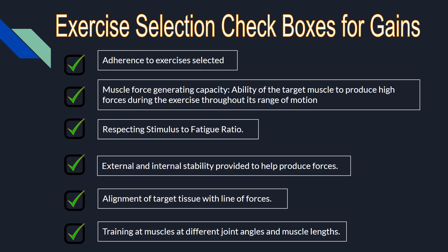Second is muscle force generating capacity — the ability of the target muscles to produce high forces during exercise throughout the range of motion. The exercise selected must ensure that it trains the muscle through a good range of motion so the muscle can produce sufficient tension in most stages of the movement. For example, for complete quad development, any squatting pattern would be programmed. However, squatting patterns only train the quads at the bottom where the muscles are stretched, but not in the fully extended knee position — this is where a leg extension machine is helpful. The same goes for dumbbell lateral raises, where the most tension is at the top, but there's little tension when the arm is down.